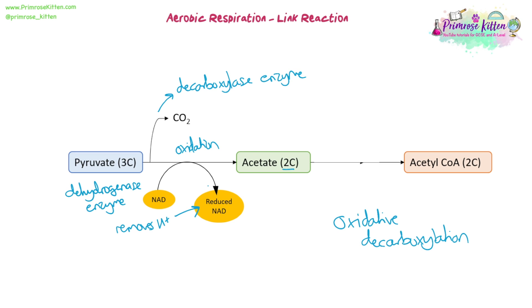We've lost a carbon as carbon dioxide, and we now have a molecule called acetate. We then need to transport that acetate to the Krebs cycle, so we use coenzyme A. Coenzyme A binds to the acetate and forms a molecule called acetyl-CoA — it's the acetate group bound to a coenzyme. And that is the link reaction.